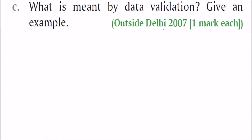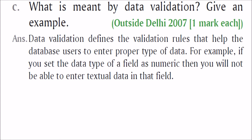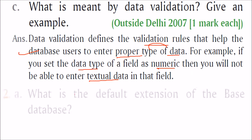What is meant by data validation? Give an example. Data validation means validating the data — putting some validation rules that help the database user enter data appropriately, ensuring the proper type of data is entered. For example, if you set the data type of a field as numeric and try to enter textual data, the database will not allow you to do that.